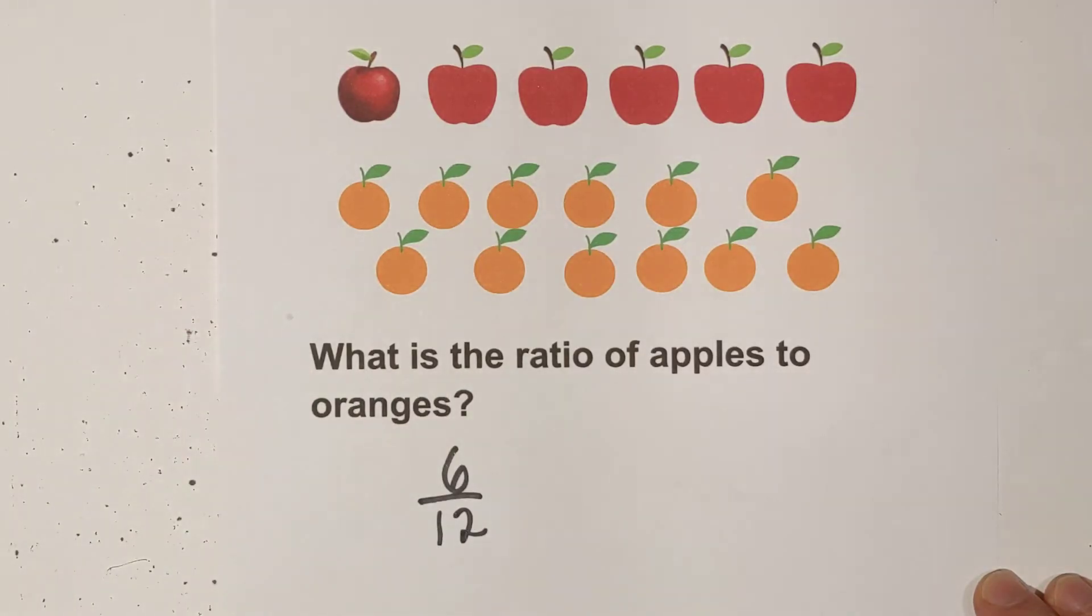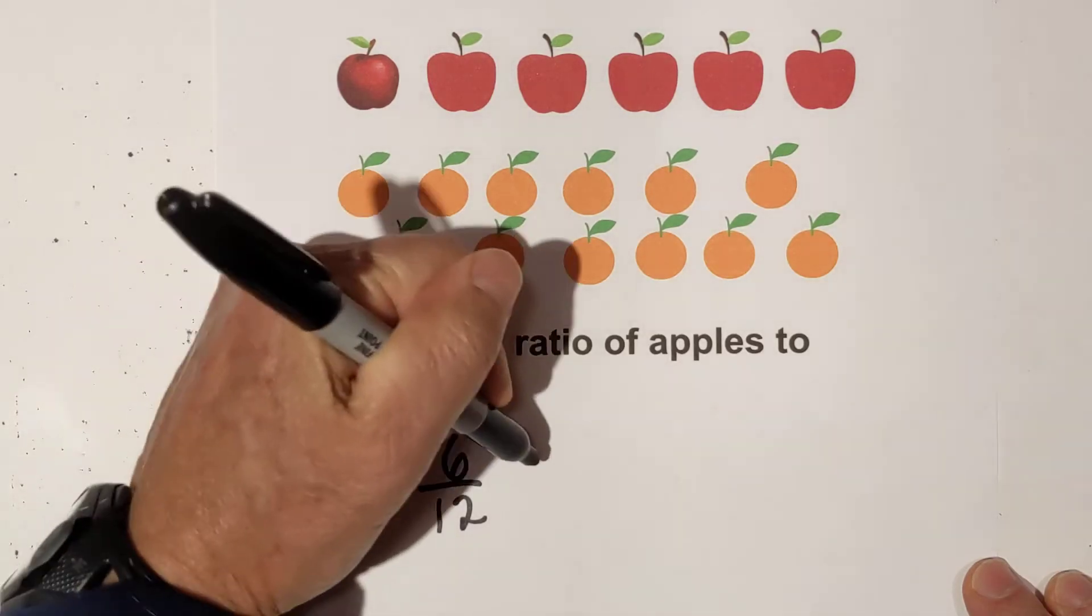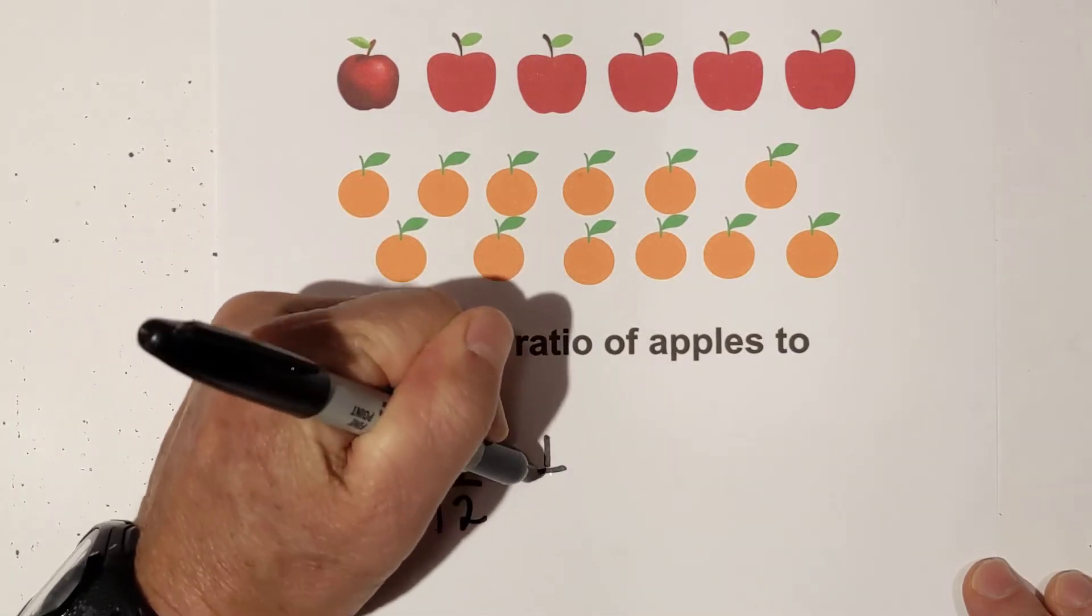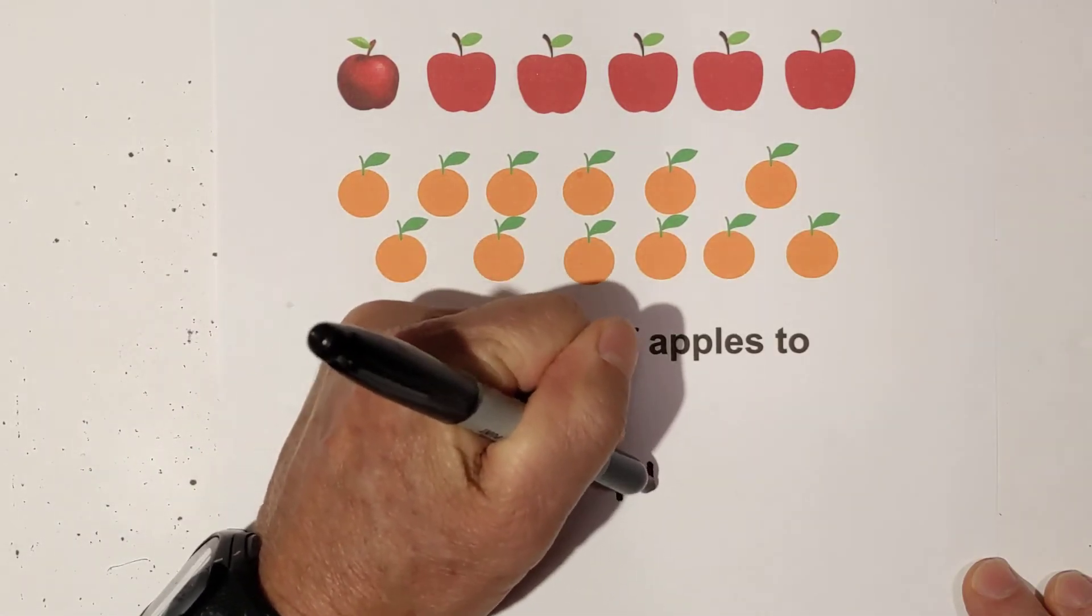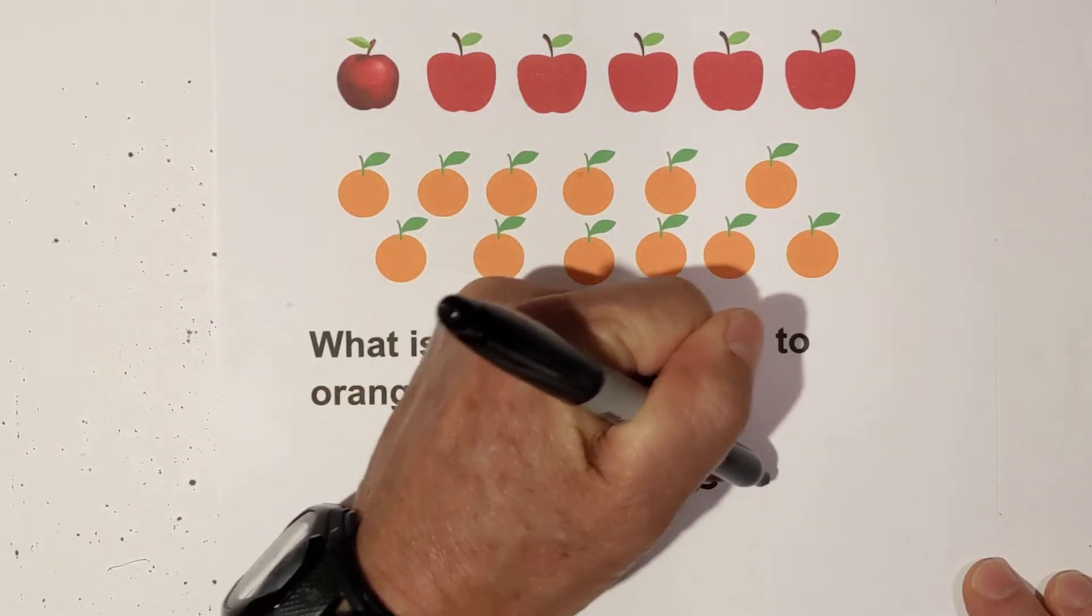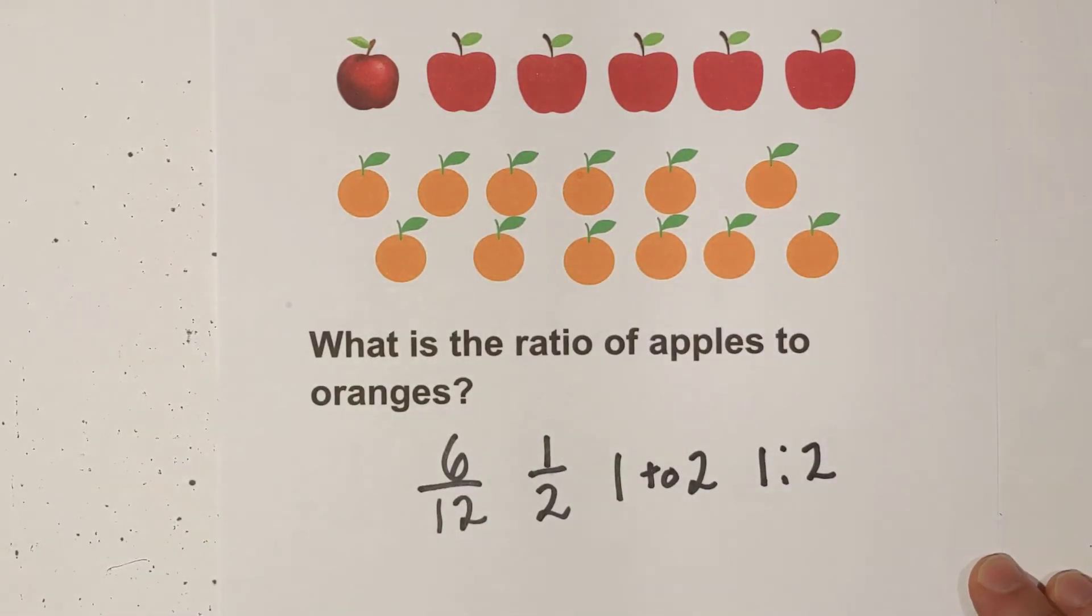So remember, you can simplify this. Six goes into both of them, so it would be one half. Or if you would like, you can write it 1 to 2, or 1:2. All of those would work for a ratio.